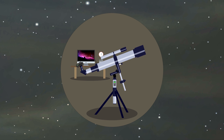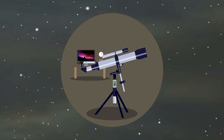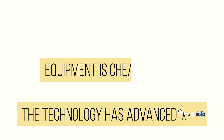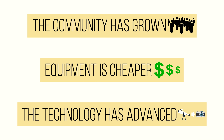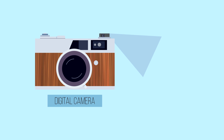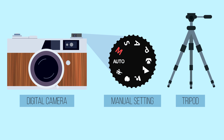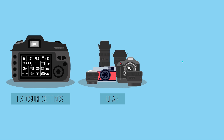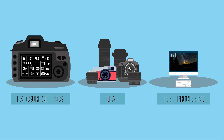But now, astrophotography is more accessible than ever. The technology has advanced, the equipment is cheaper, and the community has grown. All you really need to get started is a decent digital camera with a manual setting and a tripod. With the right exposure settings, gear, and post-processing, stars, nebulae, and galaxies that are invisible to the human eye can be revealed.